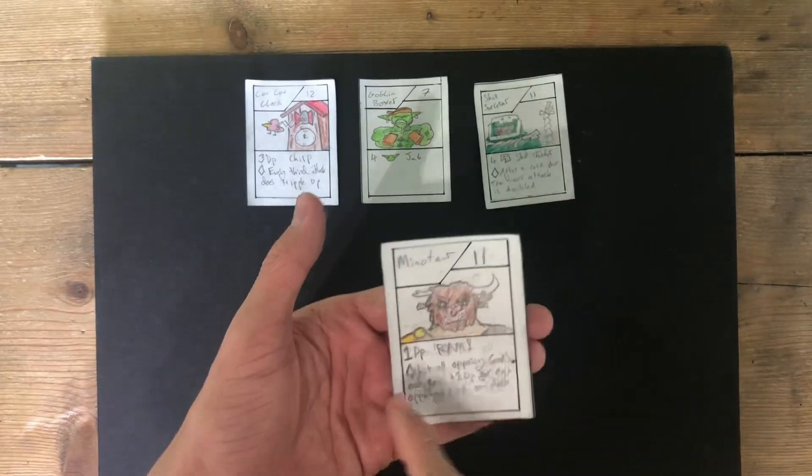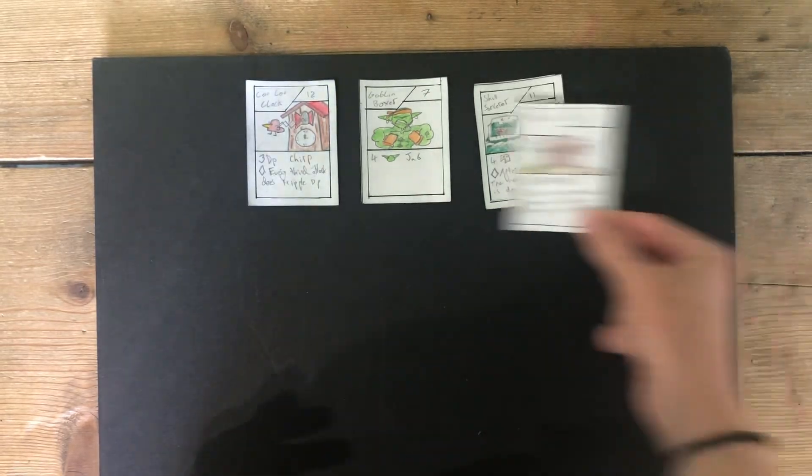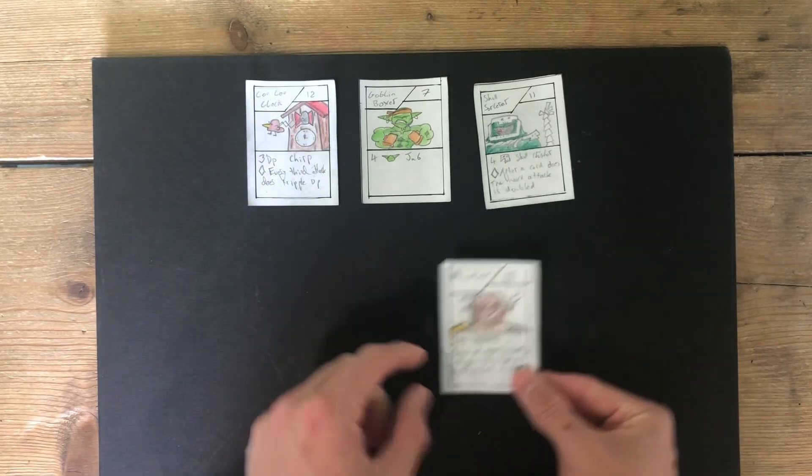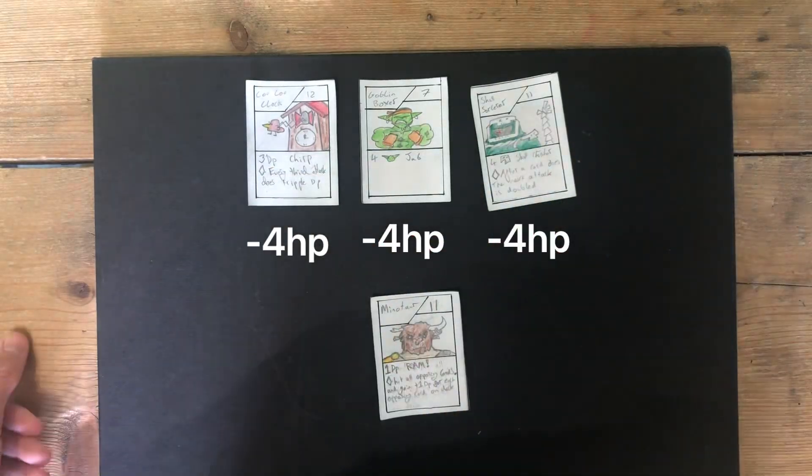Now, when I use my attack, I hit all opposing cards, dealing 1 damage plus 1 for every opposing card. So I do 1, 2, 3, 4 damage to all of the cards.